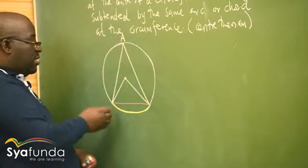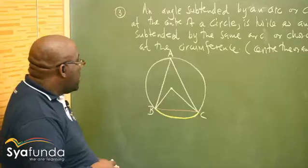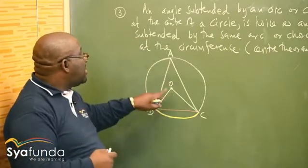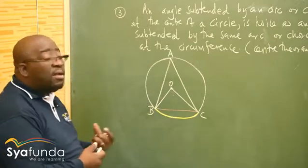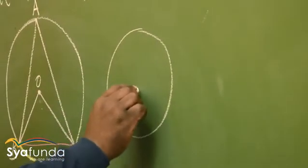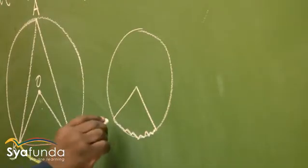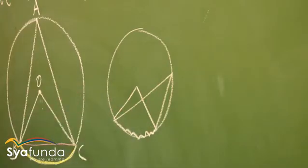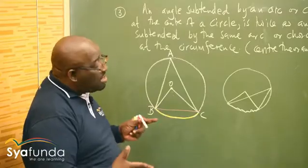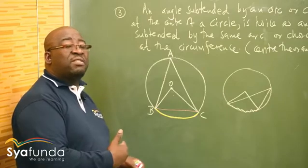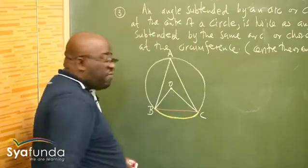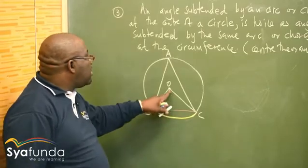Suppose we've got angle A, B, and C, and we call the center O. This theorem says the angle at the center is twice the angle at the circumference. This is not the only diagram — you can even have a different configuration where one angle goes to the center, subtended by an arc, and the same arc takes another angle to the circumference. It is still the same theorem. This angle at the center will be two times bigger than the angle at the circumference, because they must be subtended by the same arc or chord — one at the circumference, the other at the center.